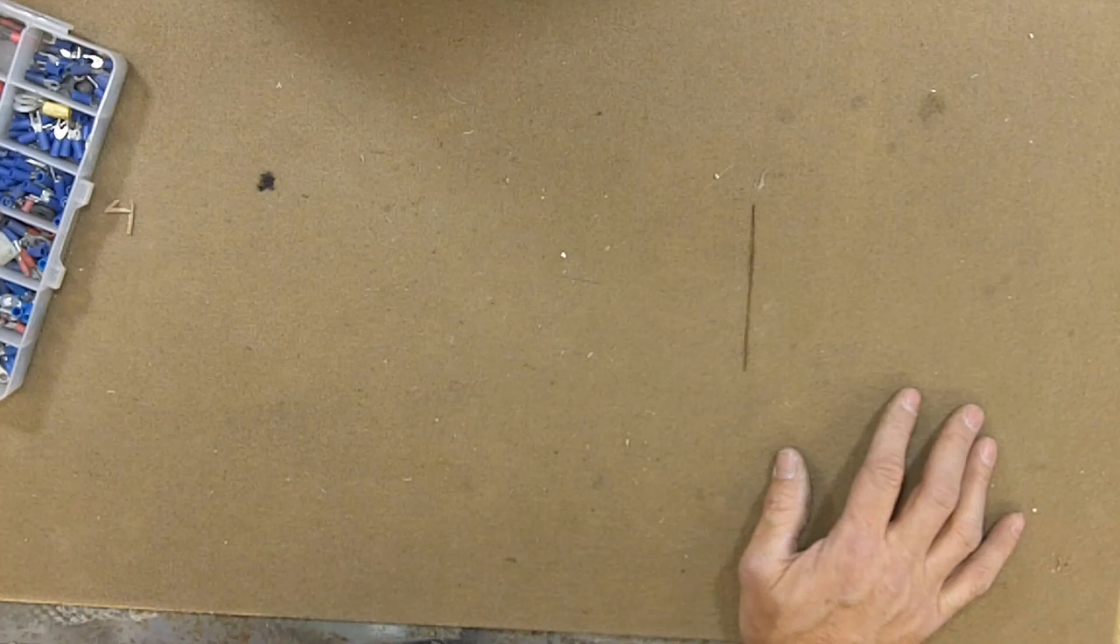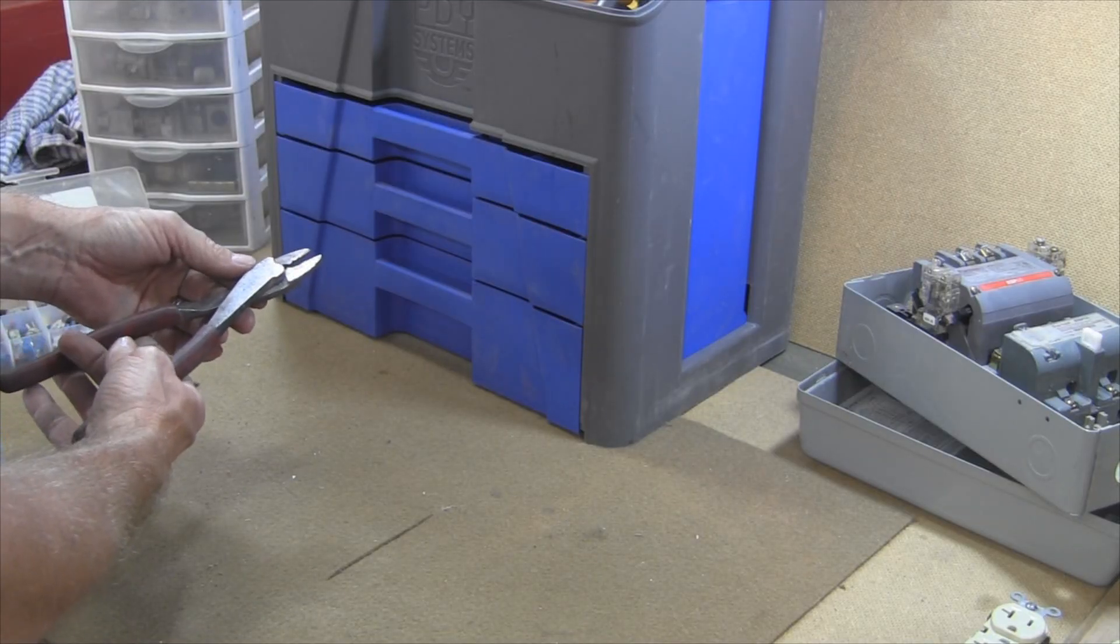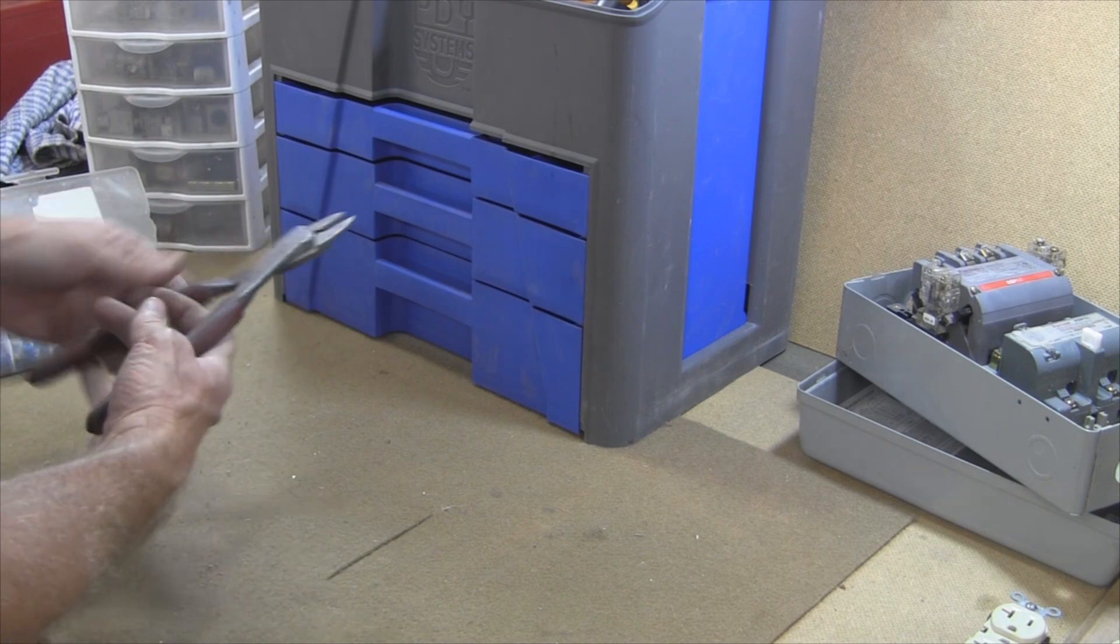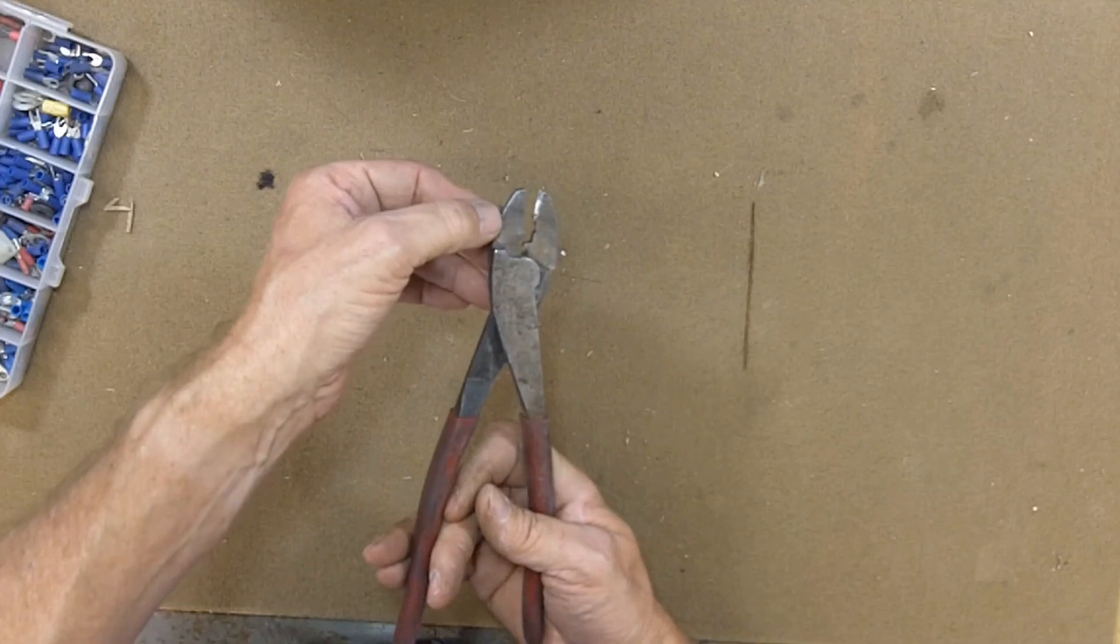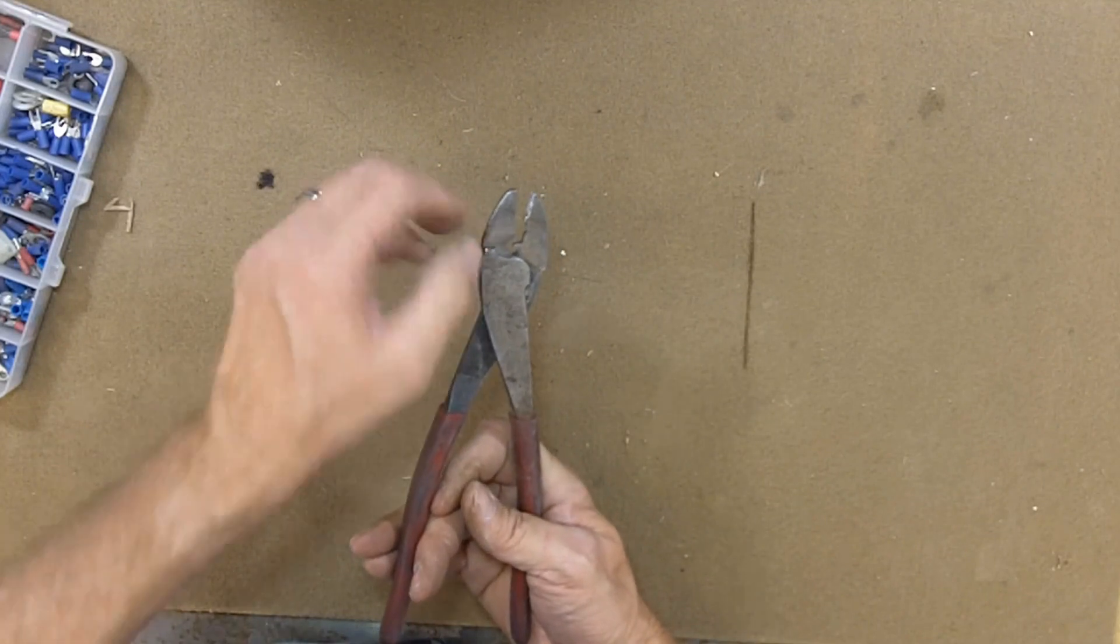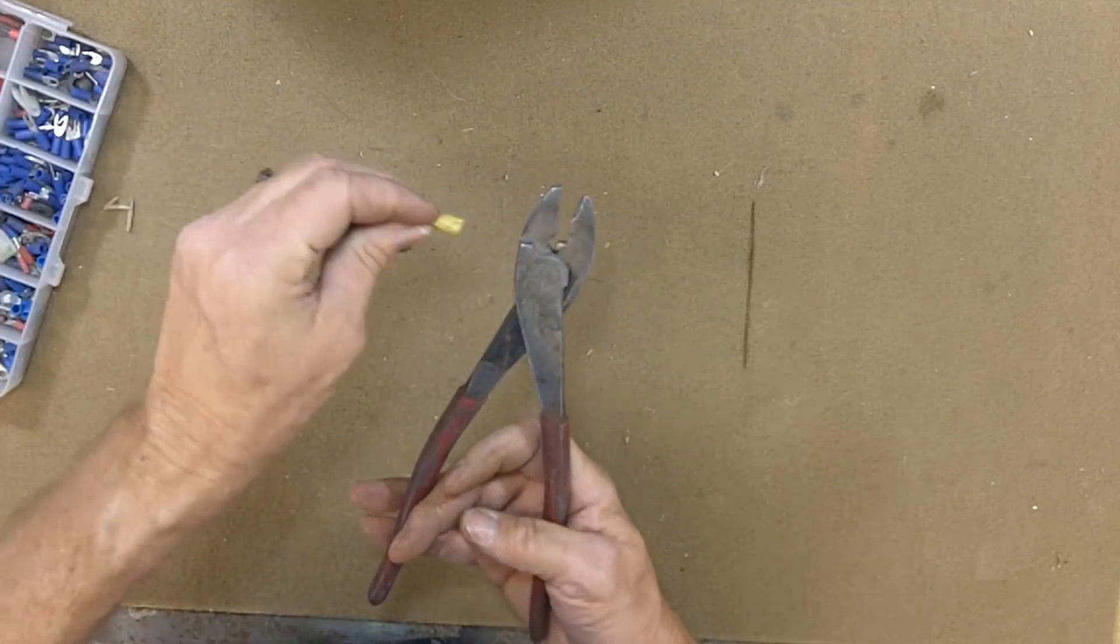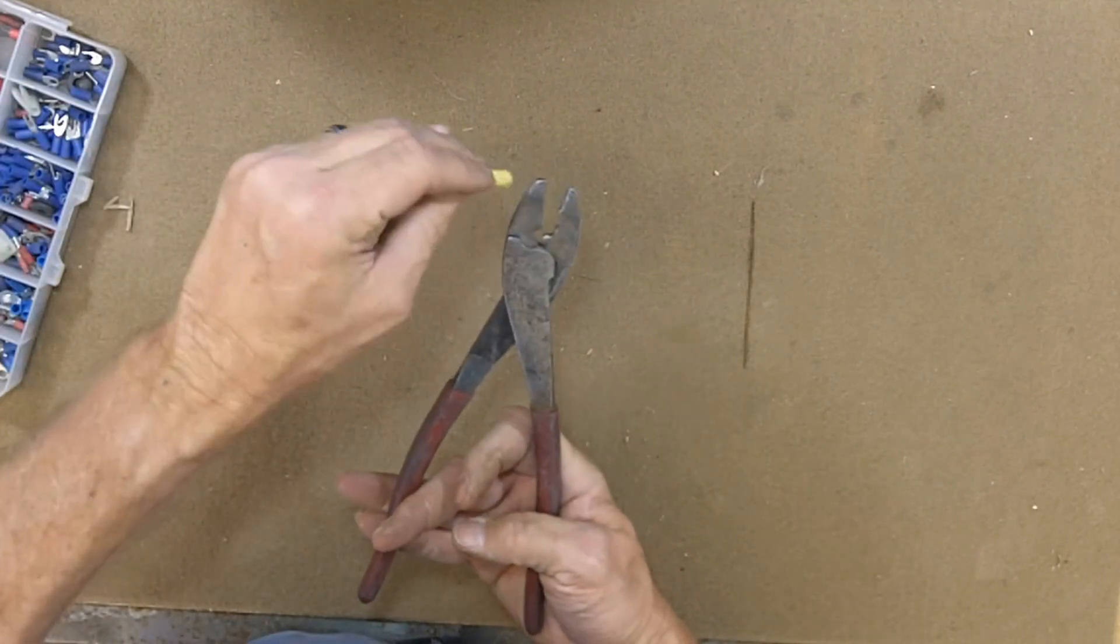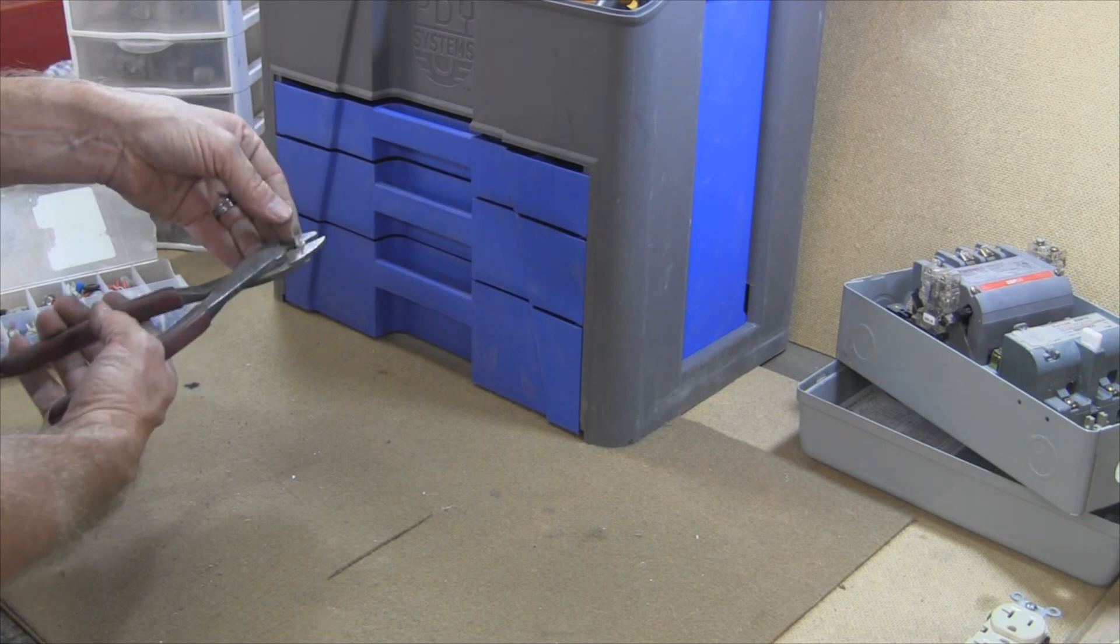Oh, let me show you real quick my crimp tool. And this is a Klein crimp tool. I've had it a long time. And it tells you in here, you've got non-insulated and insulated. So basically what you do, this is insulated is up here. Just take that, stick your stranded wire in there, crimp it down.